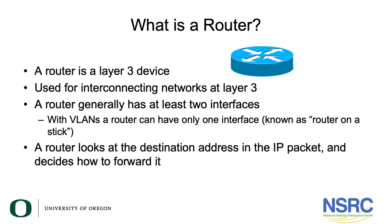What is a router? A router is a layer 3 device that is used for interconnecting networks at layer 3. A router generally has at least two interfaces. When you're using VLANs, a router can have only one interface, known as router on a stick. A router will look at the destination address of the IP packet and decide how to forward it.